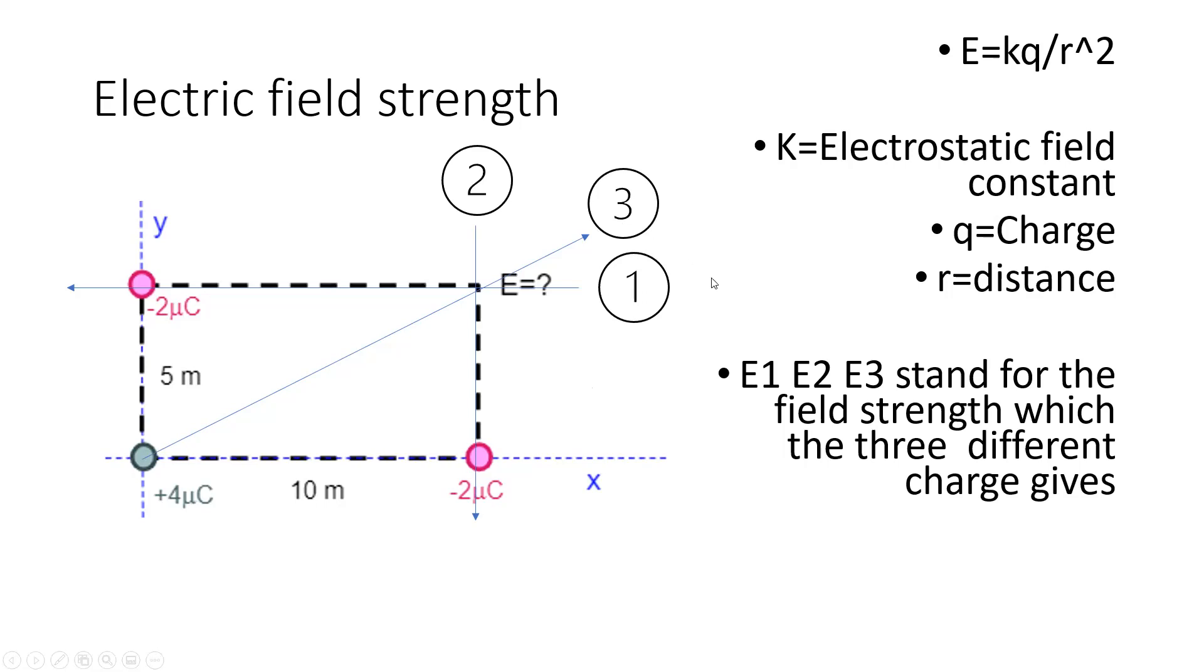Line one represents the E field contributed from the minus 2 micro coulomb charge on the Y axis. Since it is negative charge, the E field should point to the charge. Line two represents the E field contributed from the minus 2 micro coulomb charge on the X axis.